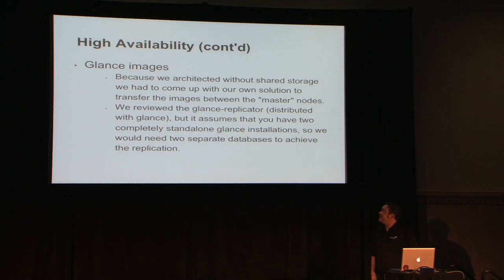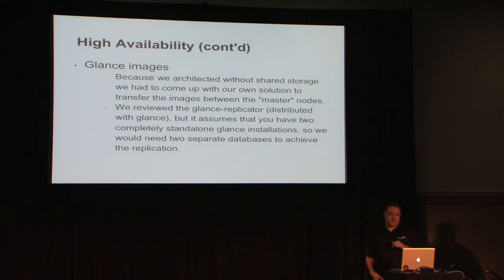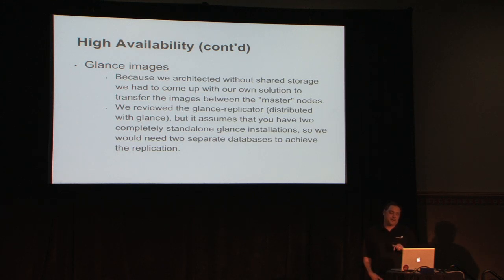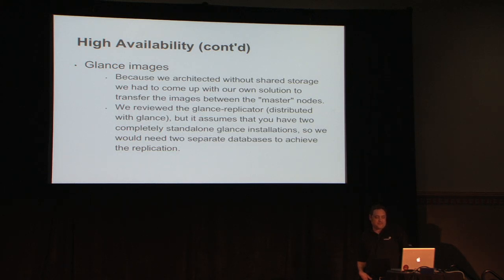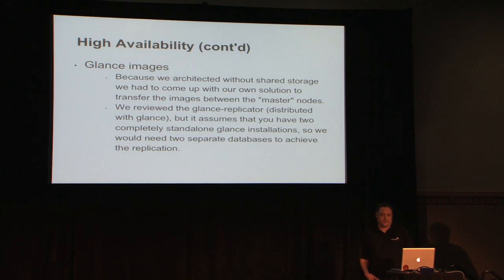For Glance images, we also had to build our own solution. We took a hard look at Glance Replicator, which comes with OpenStack, and it's a great tool, but it assumes you're going to have two completely standalone Glance servers — not something we wanted. We had looked at Glance as an active-passive model. So we're using an rsync configuration, but we do a lookup against the Glance database to see what images are there and only sync the ones we need when new ones are created — we don't constantly transfer images back and forth. That was one we had to write ourselves; it's open source.